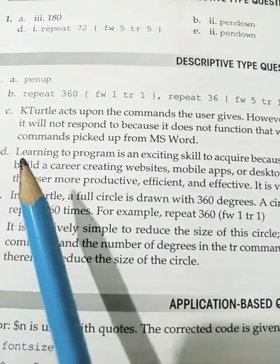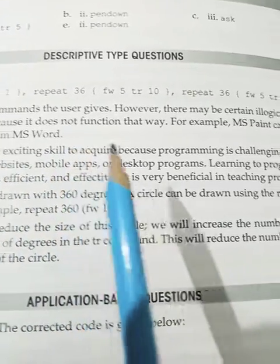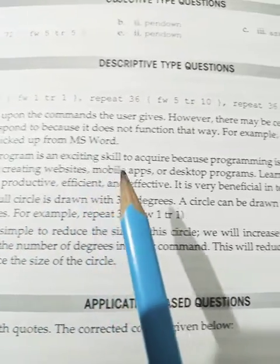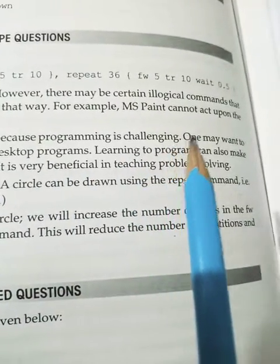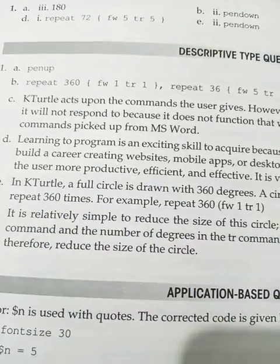Answer number C: KTurtle acts upon the commands the user gives. However, there may be certain illogical commands that it will not respond to because it does not function that way. For example, MS Paint cannot act upon the commands picked up from MS Word.